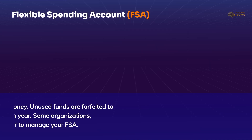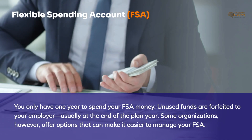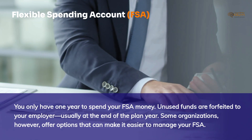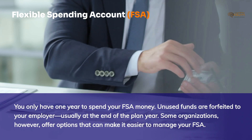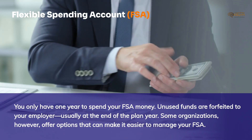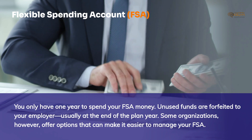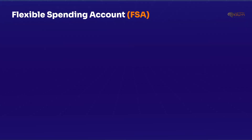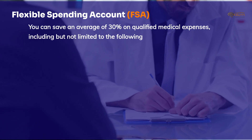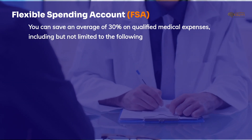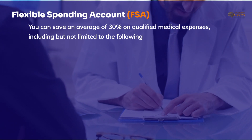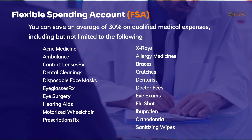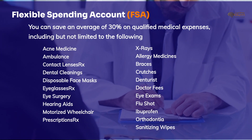Now, timing matters. You only have one year to spend your FSA money. Unused funds are forfeited to your employer, usually at the end of the plan year. Some organizations, however, offer options that can make it easier to manage your FSA. Because of the tax savings on contributions, you can save an average of 30% on qualified medical expenses, including but not limited to the following. You can pause the video here and go through them if you would like to.